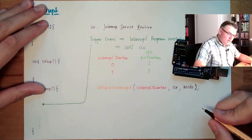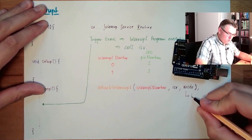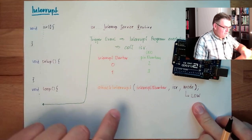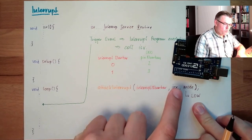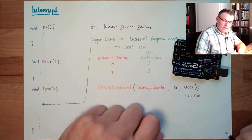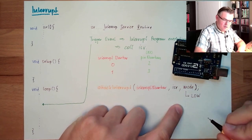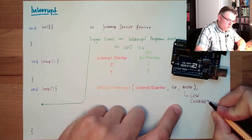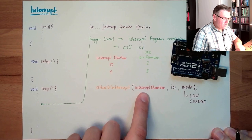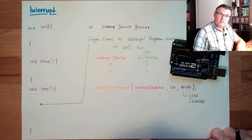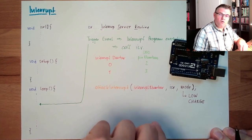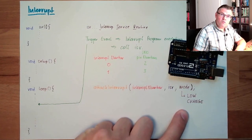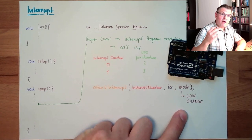What's this mode? This mode can either be LOW, just write in LOW. Then this interrupt is executed whenever the pin is low. It can be CHANGE. Then the interrupt is executed whenever there is a change, from zero to one or from one to zero, from zero to five volts or from five volts to zero.